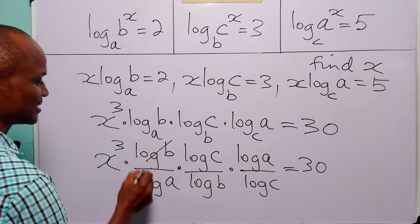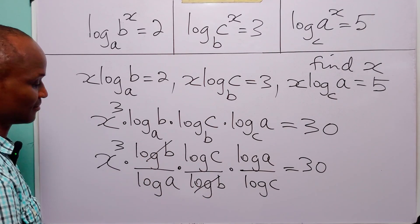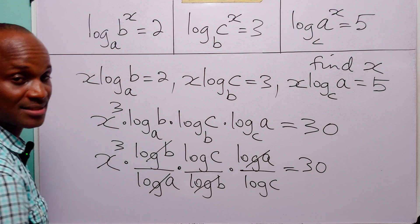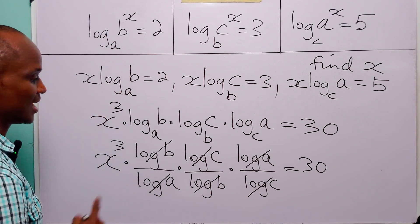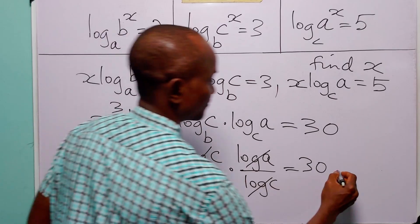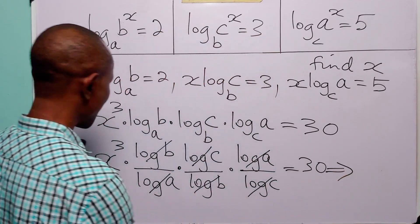Now you can see that this is going to cancel this. This is going to cancel this. And this is going to cancel that. Leaving us with x cubed.